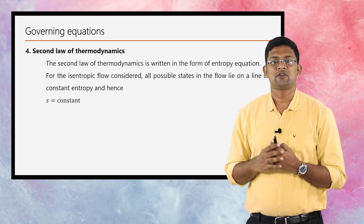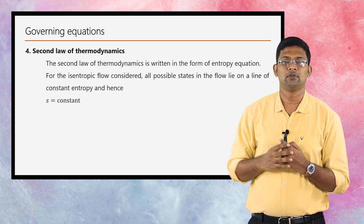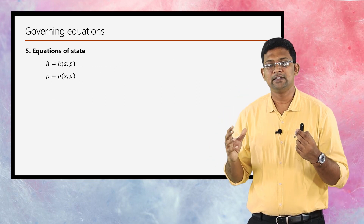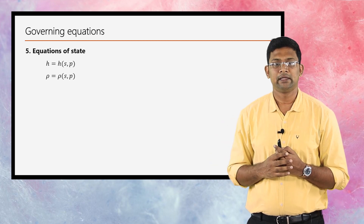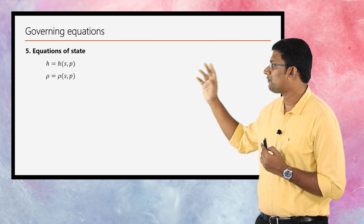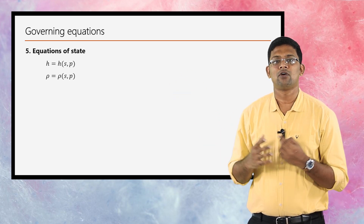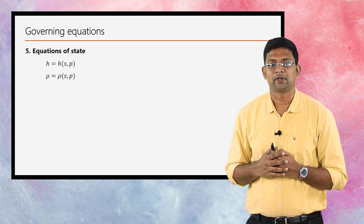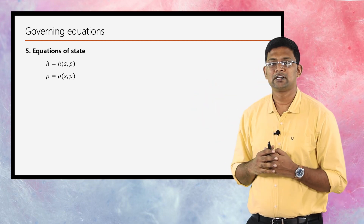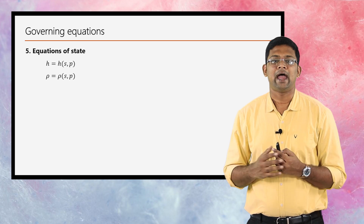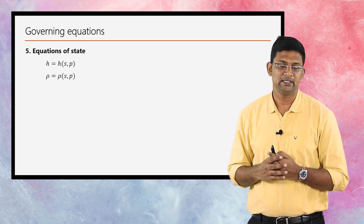These four equations are the fundamental governing equations for an isentropic process. In order to get a closed-form solution, the equations of state in algebraic form must also be considered. The equation of state tells us that enthalpy h is a function of entropy s and pressure p, and similarly, density ρ is a function of entropy s and pressure p. This is the fifth governing equation — the equations of state.